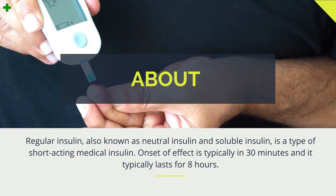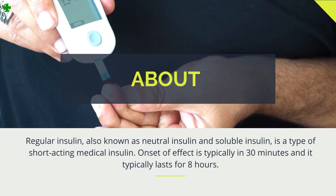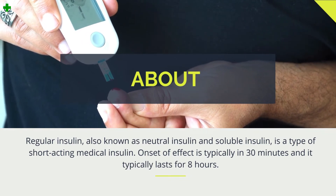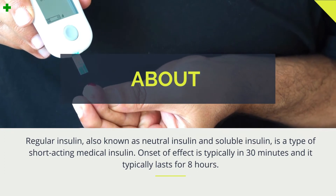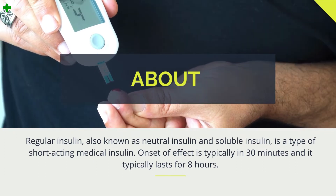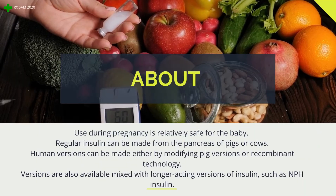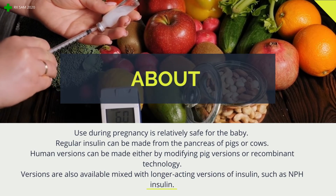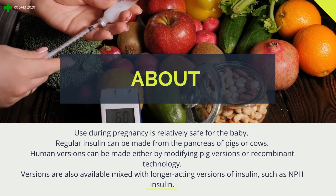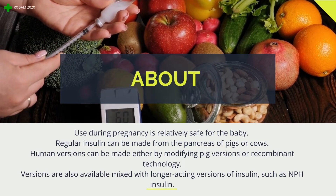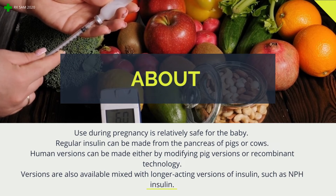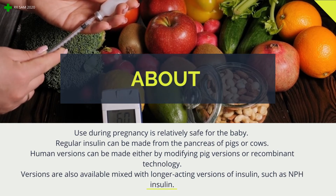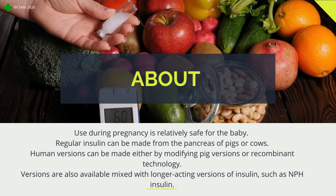Regular insulin, also known as neutral insulin and soluble insulin, is a type of short-acting medical insulin. Onset of effect is typically in 30 minutes and it typically lasts for eight hours. Use during pregnancy is relatively safe for the baby. Regular insulin can be made from the pancreas of pigs or cows. Human versions can be made either by modifying pig versions or recombinant technology. Versions are also available mixed with longer-acting versions of insulin such as NPH insulin.